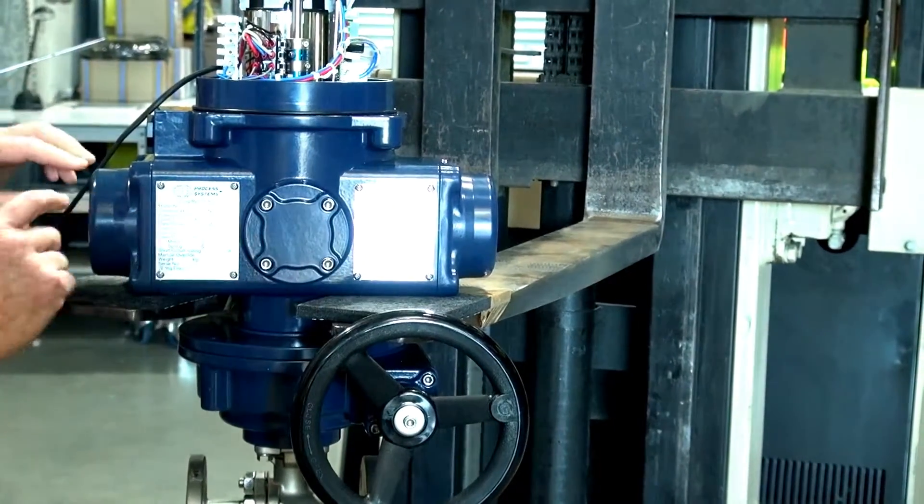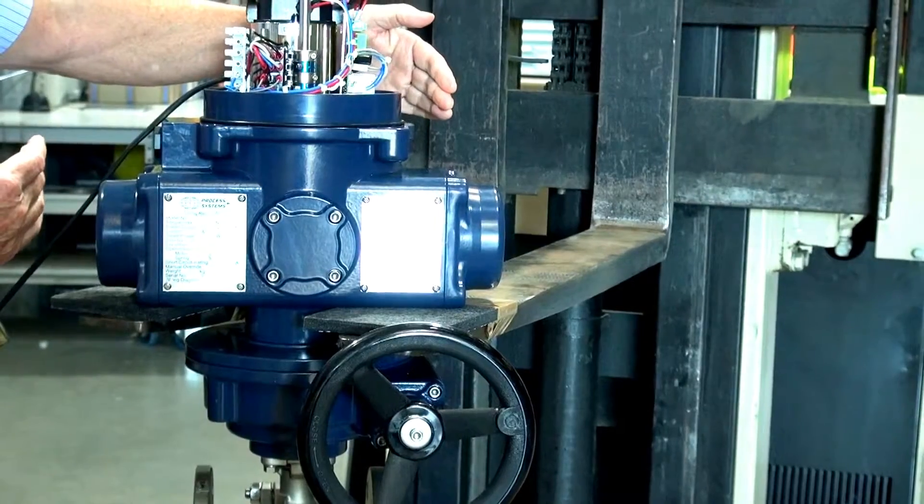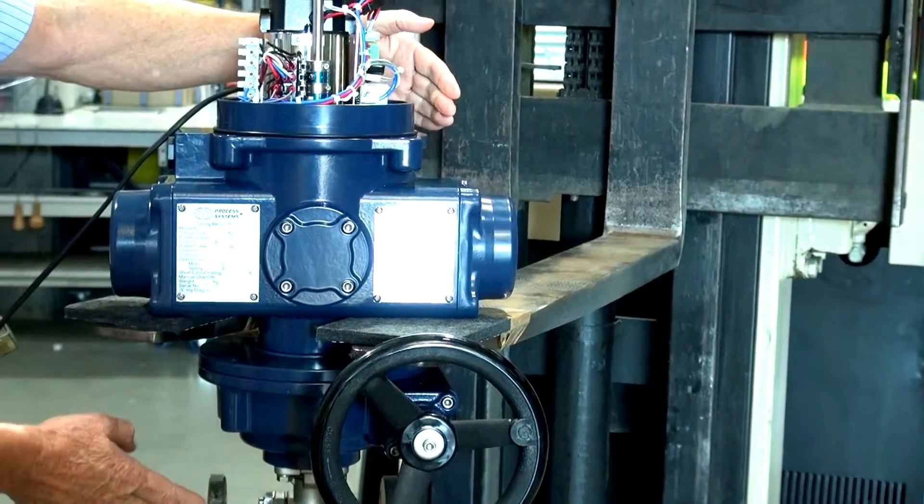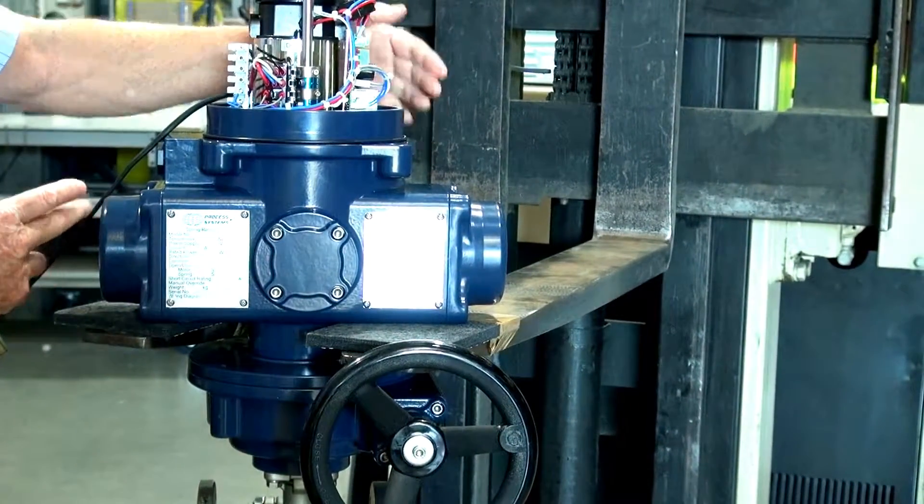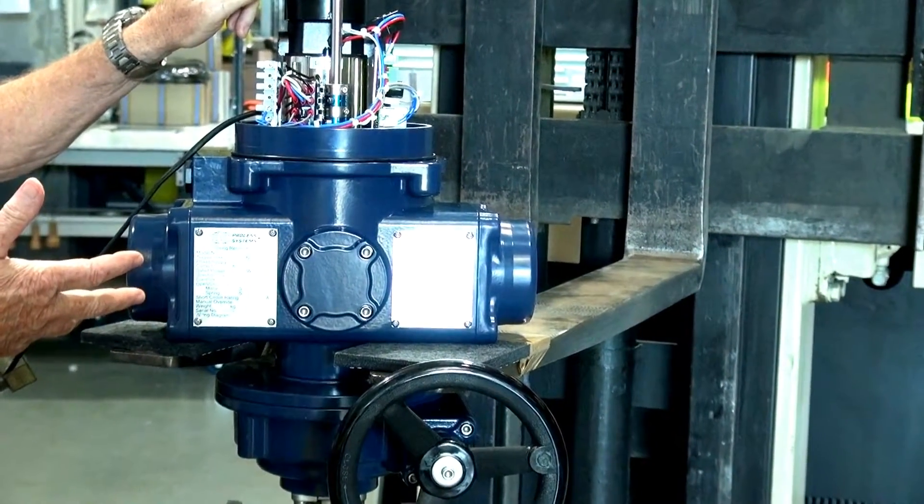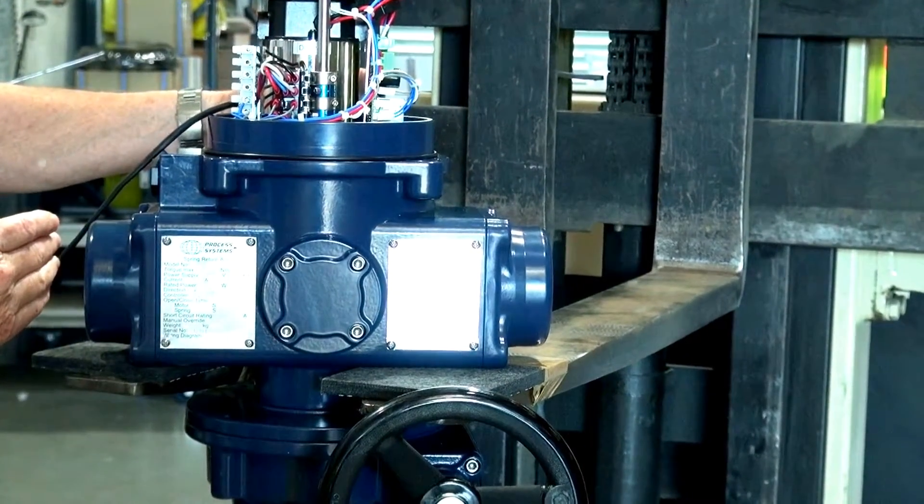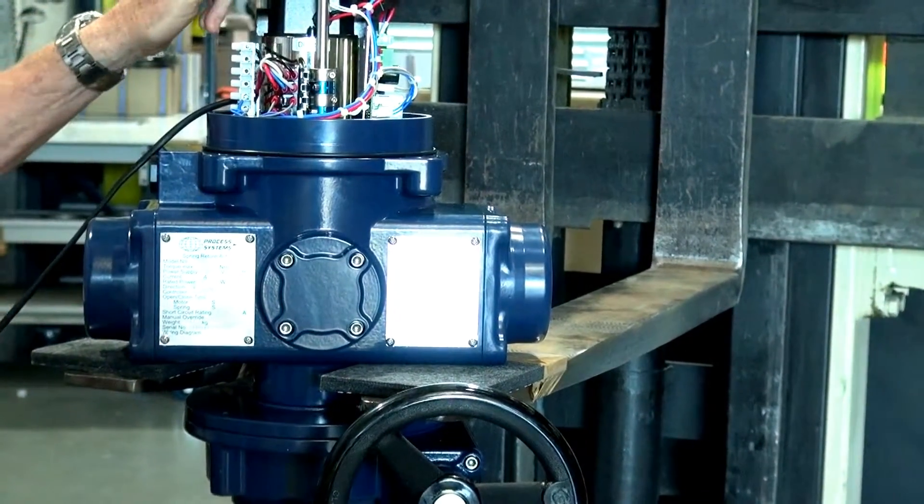A set of springs are mounted either side here. When the actual unit is open or closed, depending on which way the ball valve is set up, the brake here locks the unit off and it waits until such time when the power is removed. The springs then close the unit back down again.